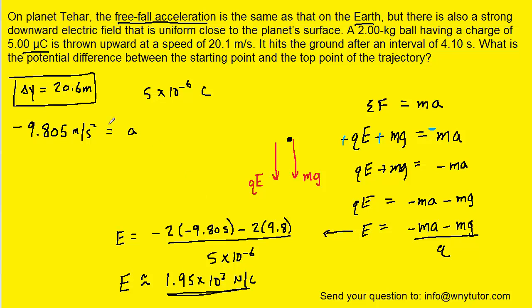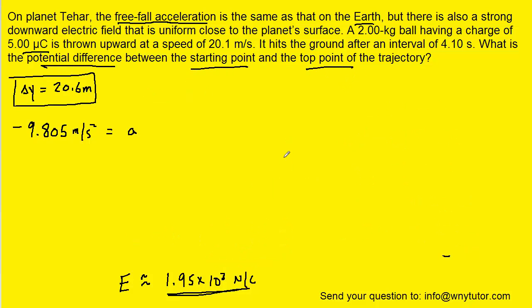The question, though, wants the potential difference between the starting point and the top point. Well, let's recall that earlier we calculated the maximum height that the ball reaches. It was delta y is equal to 20.6 meters. We know that the potential difference between two points is equal to the electric field multiplied by the distance between those two points.